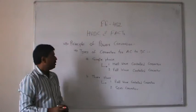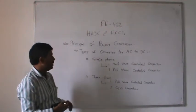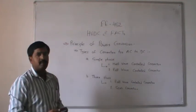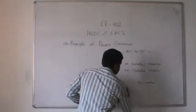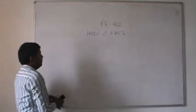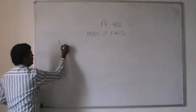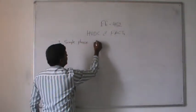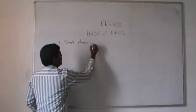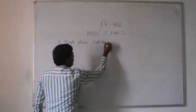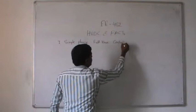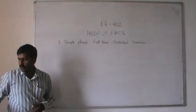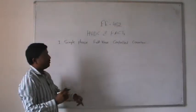These are the main types of converters available for converting AC into DC. We will first look at the single-phase full-wave controlled converter, and also the three-phase full-wave controlled converter. This is a schematic diagram of a single-phase full-wave controlled converter.